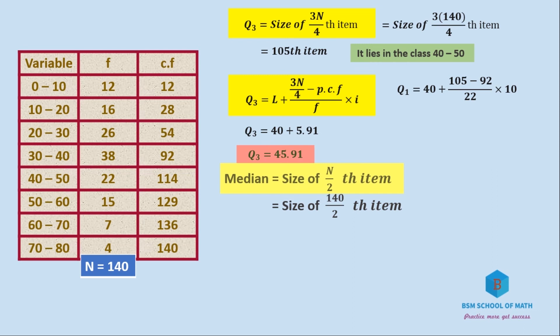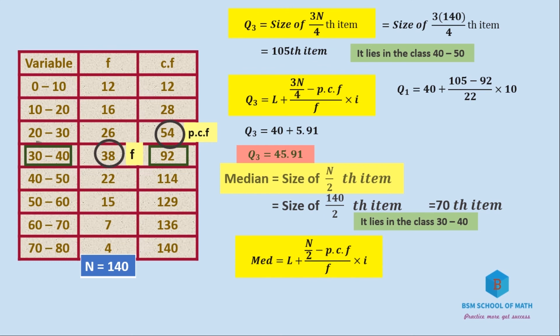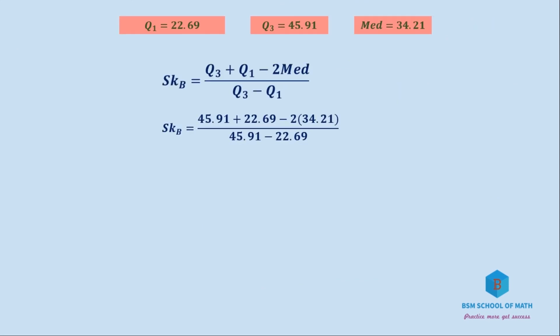Median is the size of N/2 th item. 140/2 equals the 70th item. The 70th item or above is 92 in cumulative frequency, corresponding to class 30 to 40. Using the formula with L = 30, PCF = 54, and F = 38: Median = 30 + (70 - 54)/38 × 10 = 30 + 4.21 = 34.21.